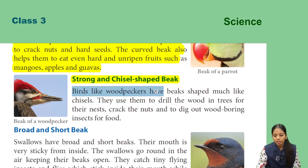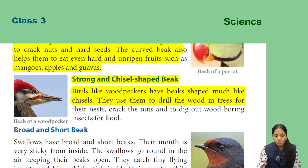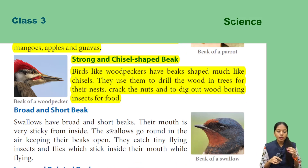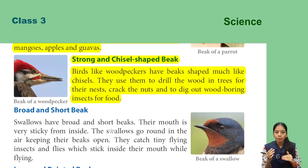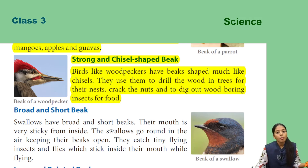Strong and chisel-shaped beak: birds like woodpeckers have beaks shaped much like chisels. They use them to drill holes in tree trunks for their nests, crack nuts, and dig out wood-boring insects for food. Woodpeckers' chisel-shaped beaks help them drill into tree wood to make nests, and to dig out insects for food.